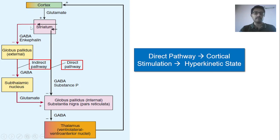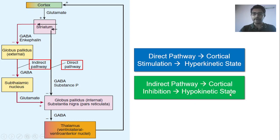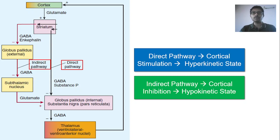On the other hand, the indirect pathway leads to activation of a structure that causes inhibition of the thalamus — a hypokinetic state. Usually, there is a balance between these two states. Both hyperkinetic and hypokinetic states coexist, and this delicate balance is extremely crucial for the management of fine movements.